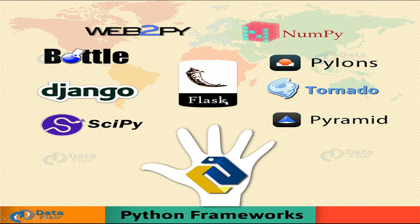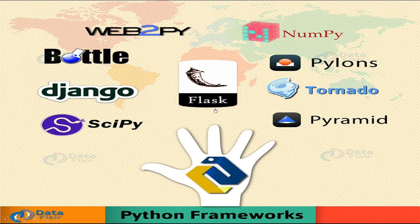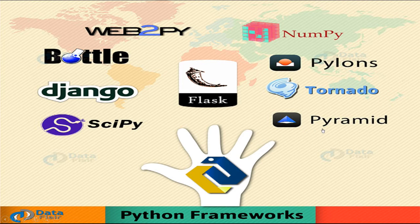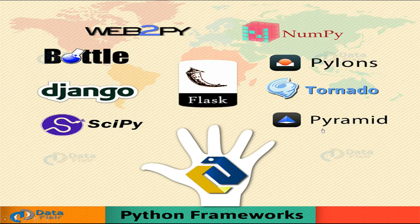Flask is a web framework written in Python. It is a micro-framework because it does not require certain libraries and tools and does not have form validation or database abstraction layers. However, you can use extensions to add extra features. Pyramid is another web framework — it is neither a mega-framework that makes decisions for you, nor a micro-framework. It gives you optimal liberty for your project.